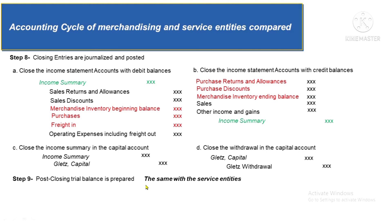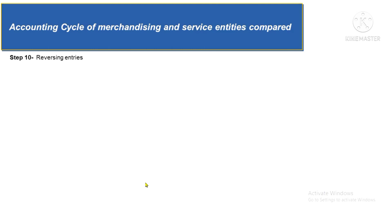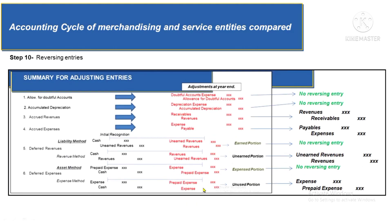The last step of the accounting cycle is reversing entries, identical to what was covered in episode 8 of the accounting cycle series. The entries that should be reversed are certain adjusting entries — specifically those for accrued revenues, accrued expenses, deferred expenses, and deferred revenues, but only if they were accounted for using the expense method and the revenue method. Adjustments for deferrals using the asset and liability methods, as well as adjustments for doubtful accounts expense and depreciation expense, are not reversed.